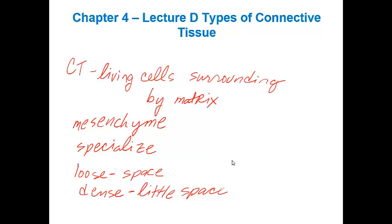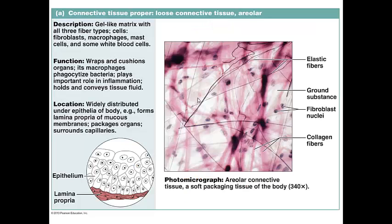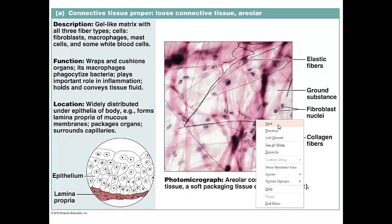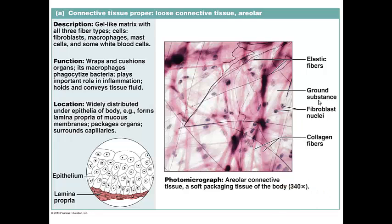The first group we're going to look at is areolar connective tissue. It's important that you know where we find this type of connective tissue and what its major function in the body is. It is a subtype of loose connective tissue, so there's lots of space in the matrix. The predominant type of cell is called the fibroblast, which appears spindle-shaped. The Latin term 'areola' actually means a small open space, and you see lots of empty space here.